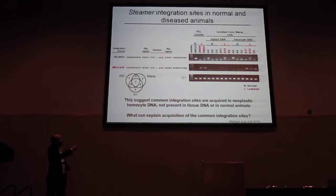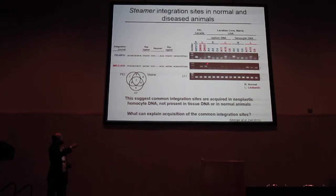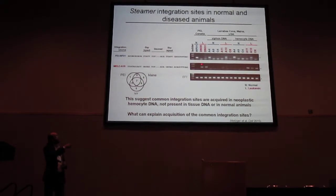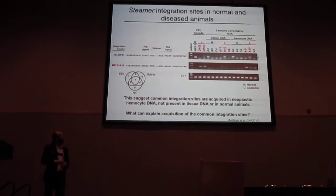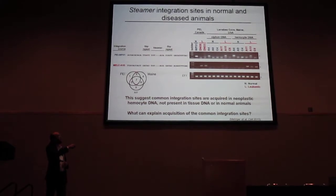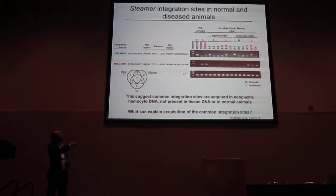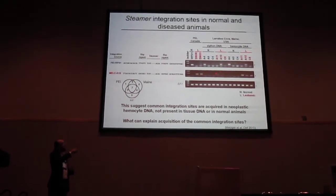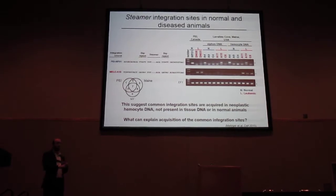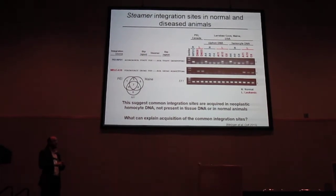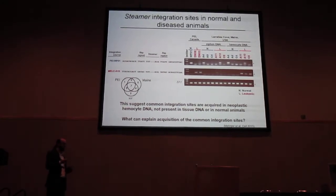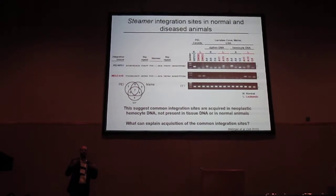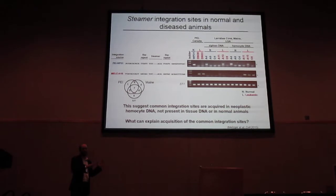But this integration site found within the neoplastic cells is not present in any of the normal individuals, yet it is found in every single cancer cell — in cancer cells from Prince Edward Island and from Maine. Notably, it's present in hemocyte DNA (the neoplastic cells), and only very weakly detected in solid tissue siphon samples, which are not enriched for cancer cells. So we have common integration sites only in the cancer cells. That doesn't make sense with de novo amplification of this transposon in each individual, because integration sites are normally random, and if they were random we wouldn't see the exact same site in every individual.